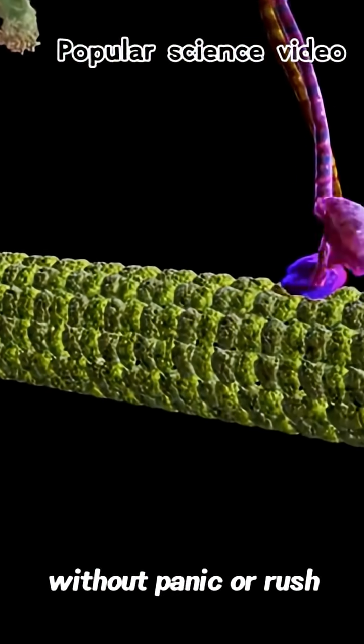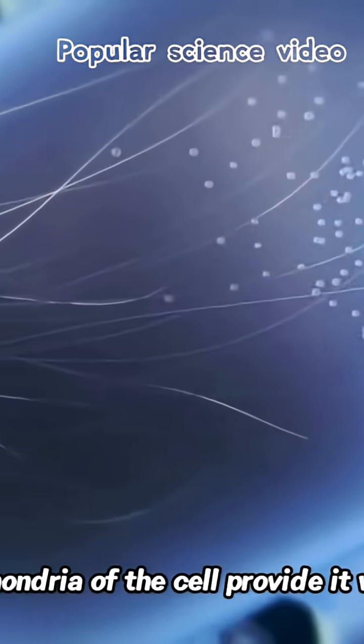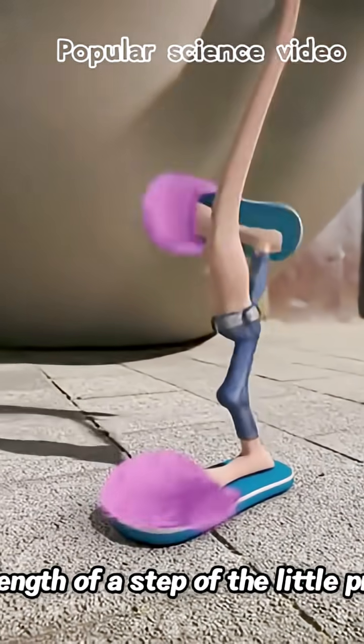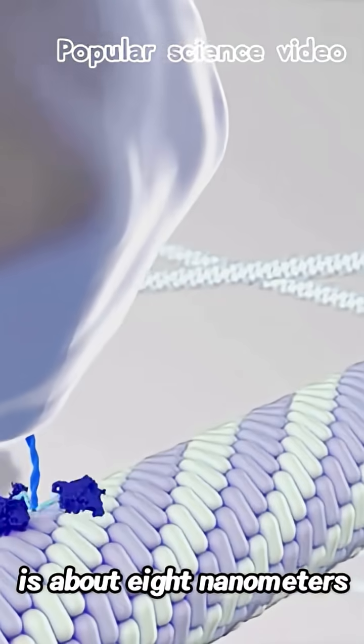The microtubules in the cell are like highways. It walks on them without panic or rush. The mitochondria of the cell provide it with energy. Each step consumes one ATP. The length of a step of the little protein is about 8 nanometers.